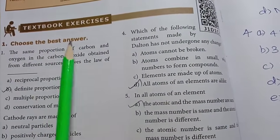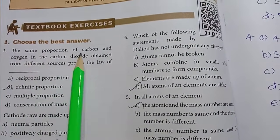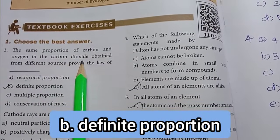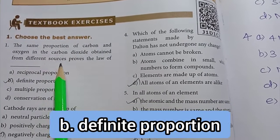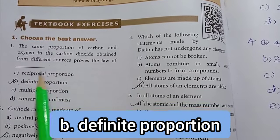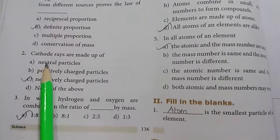Roman numeral 1, choose the best answer. The same proportion of carbon and oxygen in the carbon dioxide obtained from different sources proves the law of... Option B, definite proportion, is the right answer.